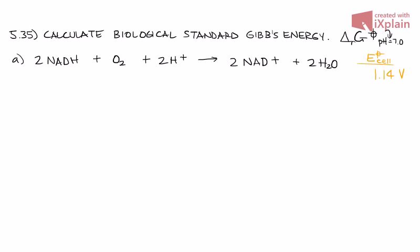There's a very nice formula that equates the cell potential, which is what we're provided, with delta G. That can be found on page 197, equation 5.14. It tells us that the cell potential is equal to negative delta G all over VF.